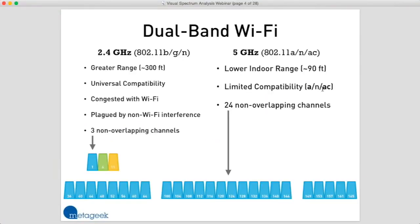The first thing I want to talk about are the differences between 2.4 and 5 gigahertz. There are a couple of big differences that we need to take into account when we're doing spectrum analysis. It's very important that we understand both of these differences. So let's start by talking about 2.4 gigahertz.